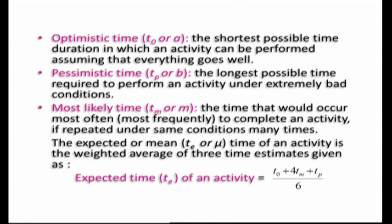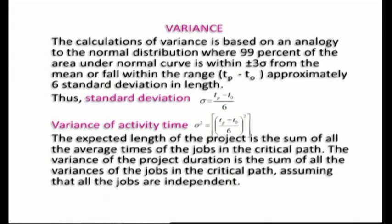The expected or mean time of an activity, denoted by t_e or mu, is the weighted average of all three time estimates, given by: t_e = (t_o + 4·t_m + t_p) / 6. To calculate the estimated time of any activity, we use this formula. We also learn how to calculate the variance, which helps us find the probability of completing a project within a particular duration.